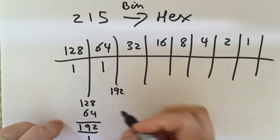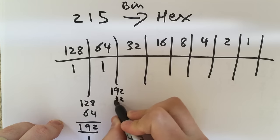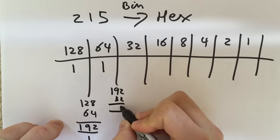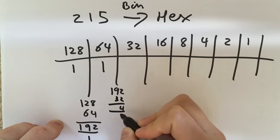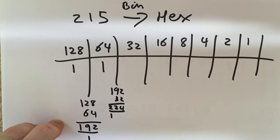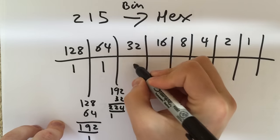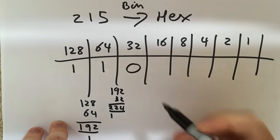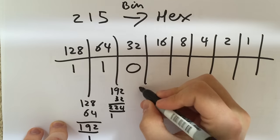If I add on 32, where will I get to? Well, 2 add 2 is 4, 9 add 3 is going to be 12, 1 add 1 is 2. That gets me to 224. That's bigger than my 215 so I do not want the 32. Still stuck then on 192.